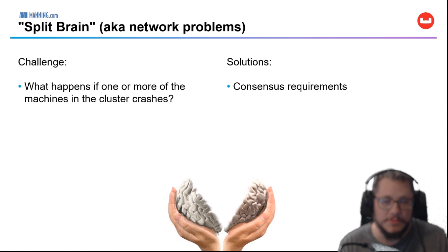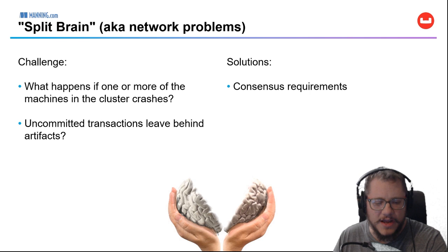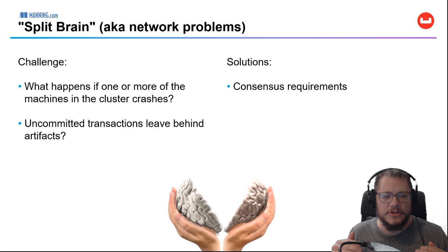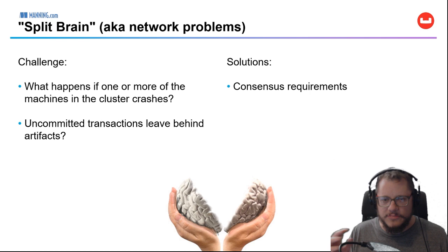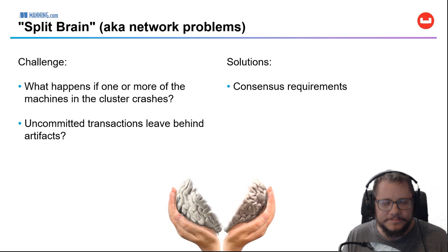The second problem is that uncommitted transactions leave behind artifacts. In a read-committed system, we should never see dirty reads. But if a transaction fails right in the middle, it's going to leave some extra stuff around that we can't view unless we flip some flags and go looking for it. Most processes can't view it, but we have to clean those up at some point, otherwise they just keep taking up space.